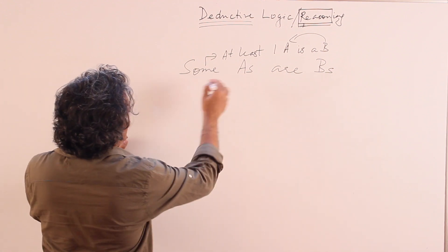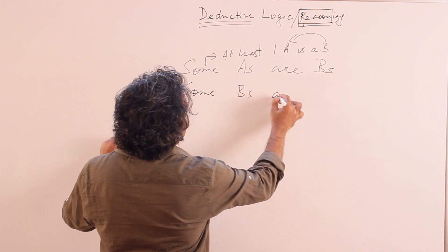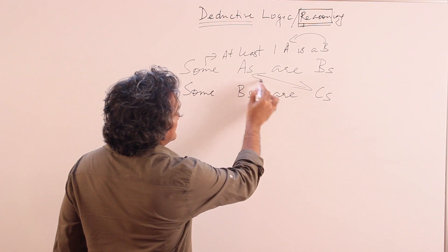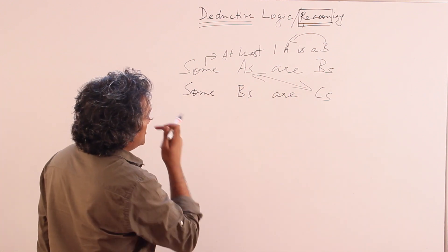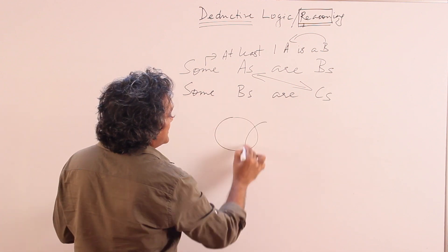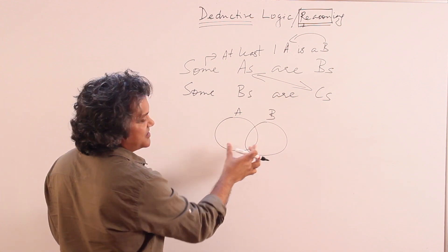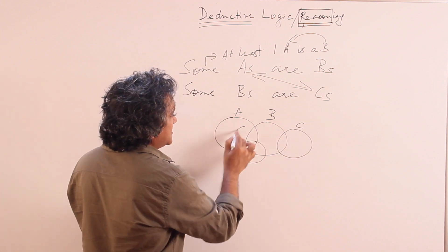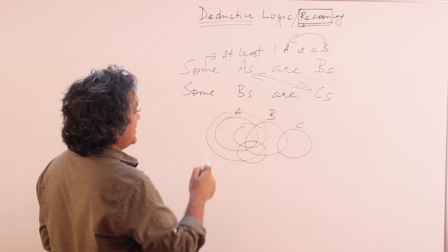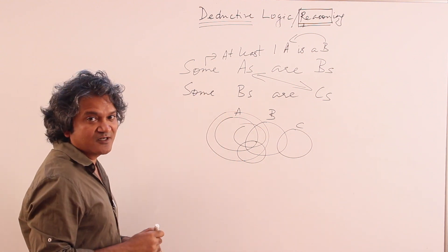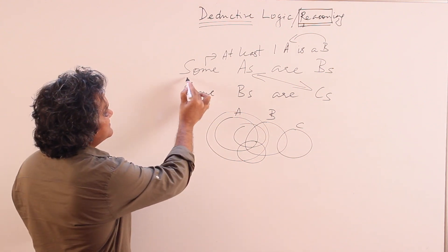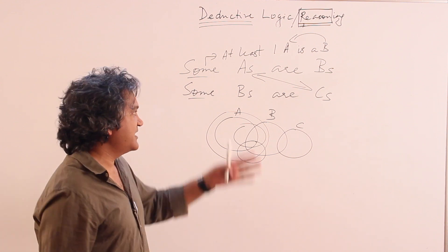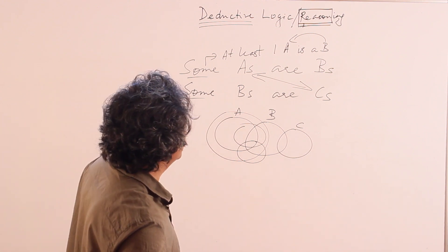Now let's move ahead. Suppose I say 'Some A's are B's' and 'Some B's are C's.' Can you show any relationship between A and C? The answer is no. 'Some B's are C's' follows the same overlapping relationship, but I don't know where that overlap falls — it may be here, here, or here, with no connection to A at all. This gives us the first shortcut in syllogisms: the moment you see both premises beginning with 'some,' you can ignore that question, because two 'some' premises cannot take you to an answer.